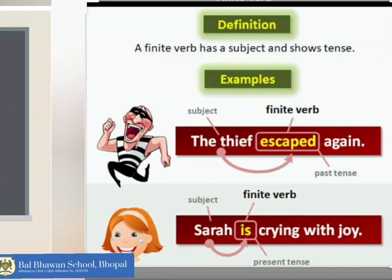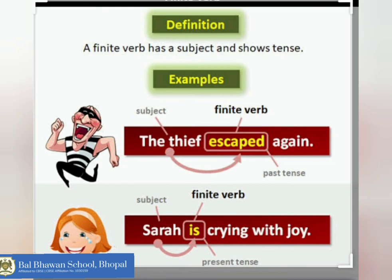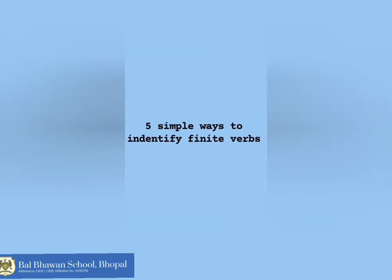Finite verbs are also sometimes called main verbs or tensed verbs. A finite verb acts as the root of a sentence. Look at these sentences: 'The thief escaped again.' Here, the word 'escaped' is the finite verb. 'Sarah is crying with joy.' Here, the helping auxiliary verb 'is' is the finite verb.